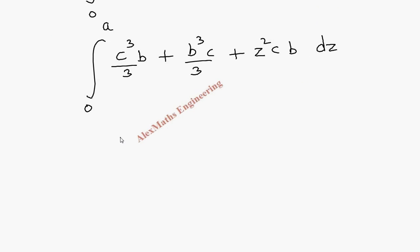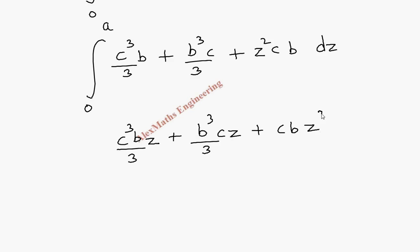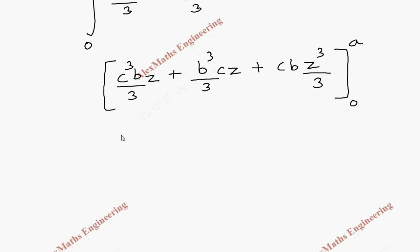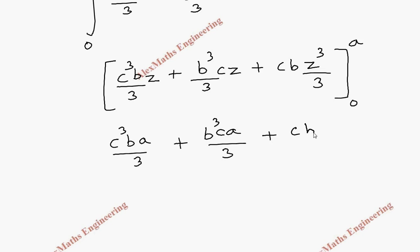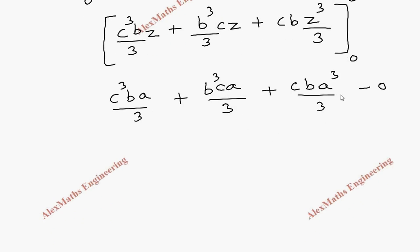Other than z, everything is a constant. So the first constant term becomes constant times z, the second constant term becomes constant times z, and z square integration gives z cube by 3. Applying the limit from 0 to a gives: c cube b a by 3, plus b cube c a by 3, plus c b a cube by 3. The lower limit makes everything zero. We can take a b c by 3 as common, so the final answer is abc by 3 times (c square plus b square plus a square).